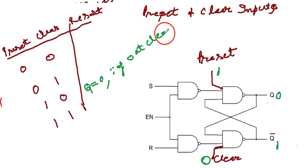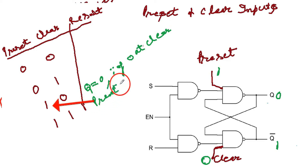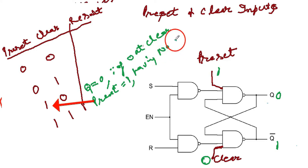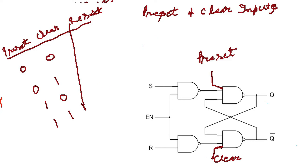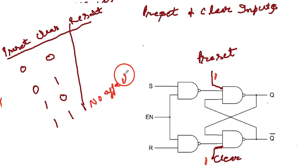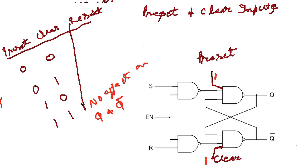Now let's look at the various combinations of preset and clear. If preset=0 and clear=0, both NAND gates give 1, so Q=1 and Q-complement=1 — this is the forbidden/illegal state and should not be used. Preset and clear should never both be 0 at the same time. If preset=0 and clear=1: Q=1, since preset dominates and clear has no effect. If preset=1 and clear=0: Q=0, since the clear dominates and preset has no effect. If preset=1 and clear=1: no effect on Q or Q-complement — the output depends on S and R as normal.